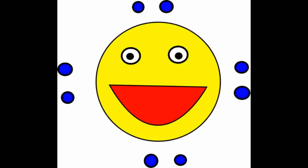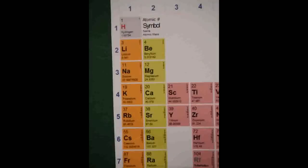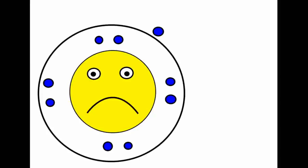Atoms like to have a full outer electron shell. The elements on the left, that is groups 1, 2 and 3, prefer to give away electrons. When a neutral atom gives away an electron in this way, it forms a positively charged ion.